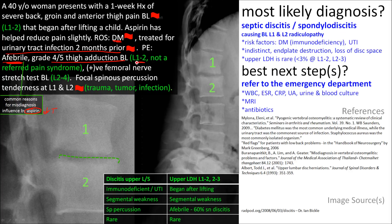She has thigh adduction weakness, which helps localize the deficits to L1 or L2 nerve roots. The femoral nerve stretch test does the same, pointing us toward L2. Spinous percussion tenderness further agrees with the suspicion of infection. Based on the history and physical exam, you should be suspicious of discitis in the upper lumbar spine.